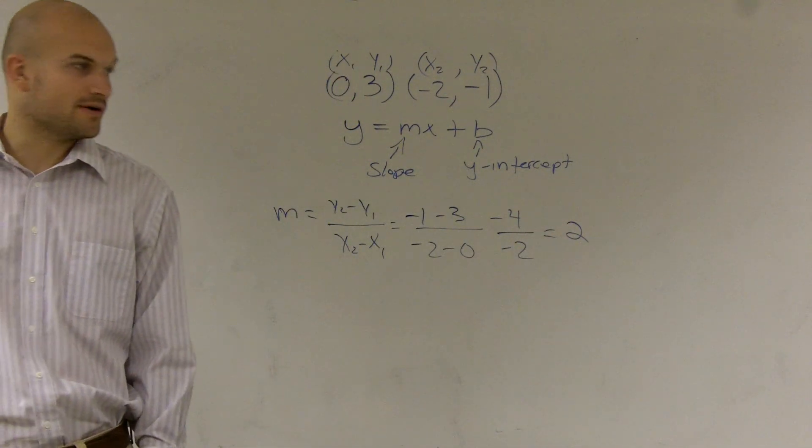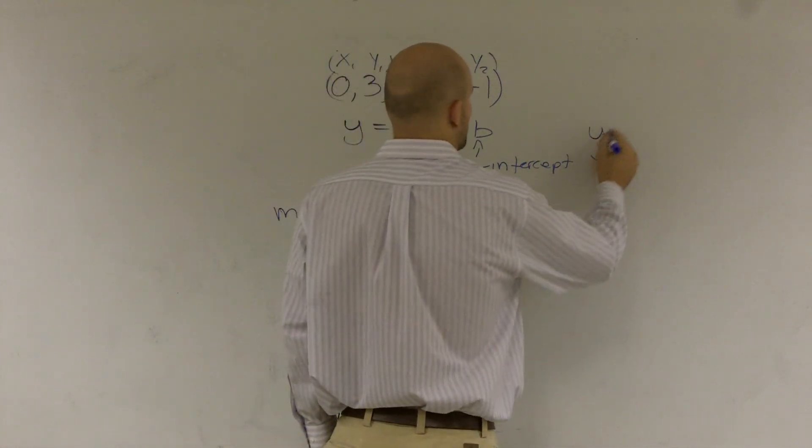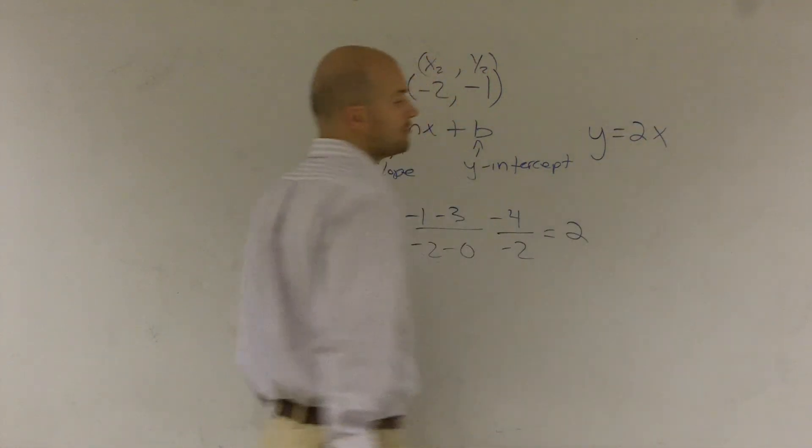All right. So therefore, what I have is my slope is y equals 2x. Now, I don't know what my b is.